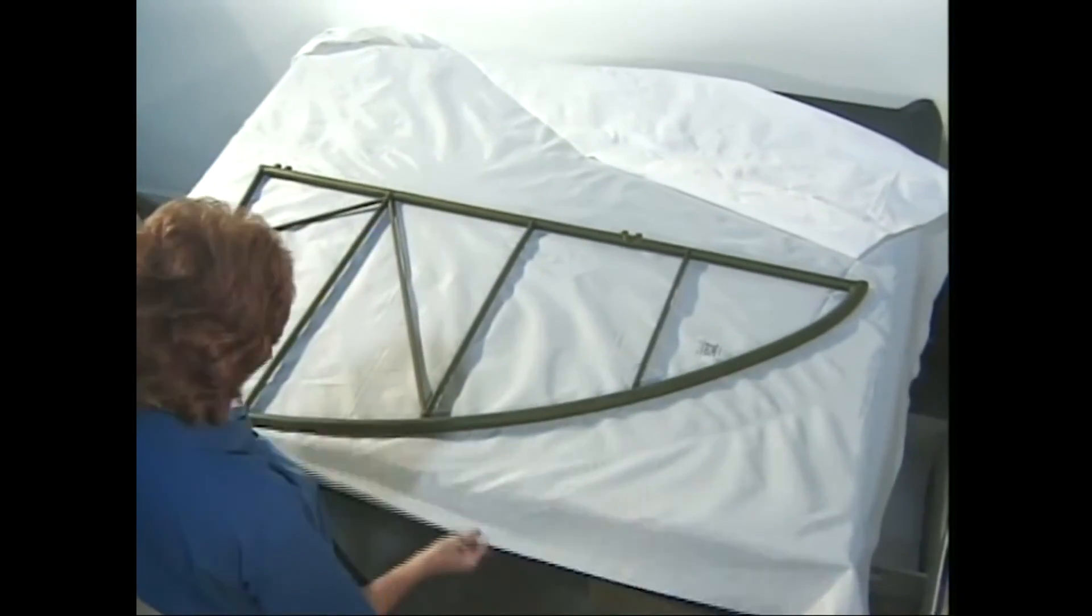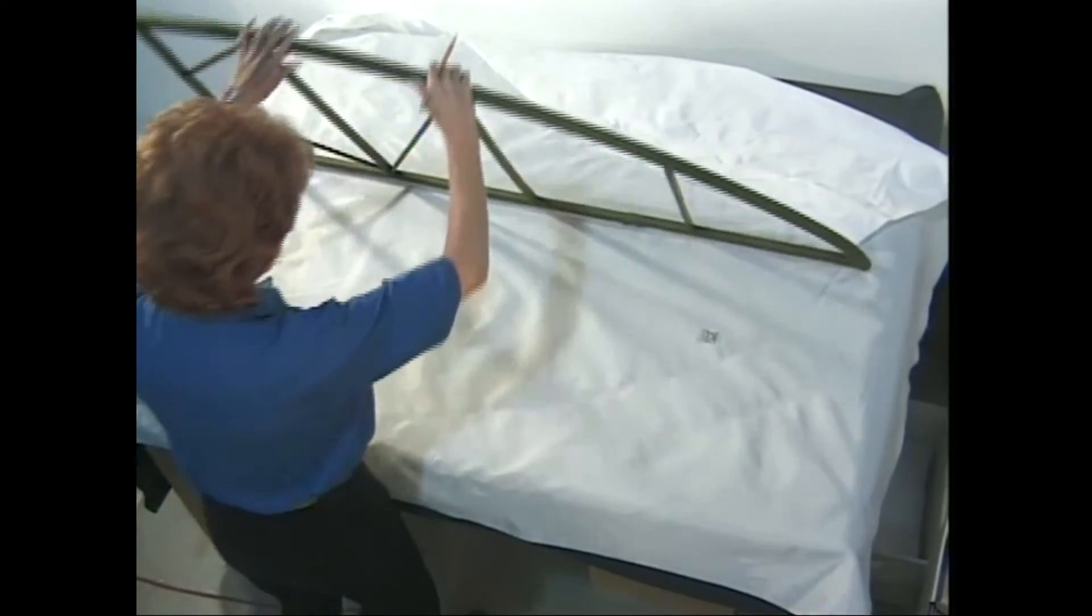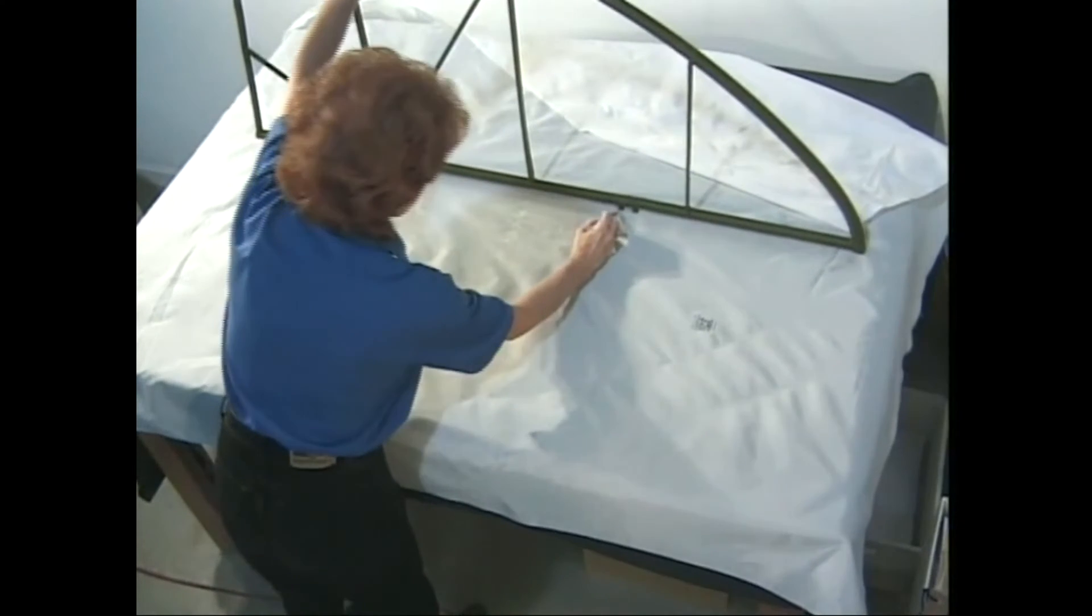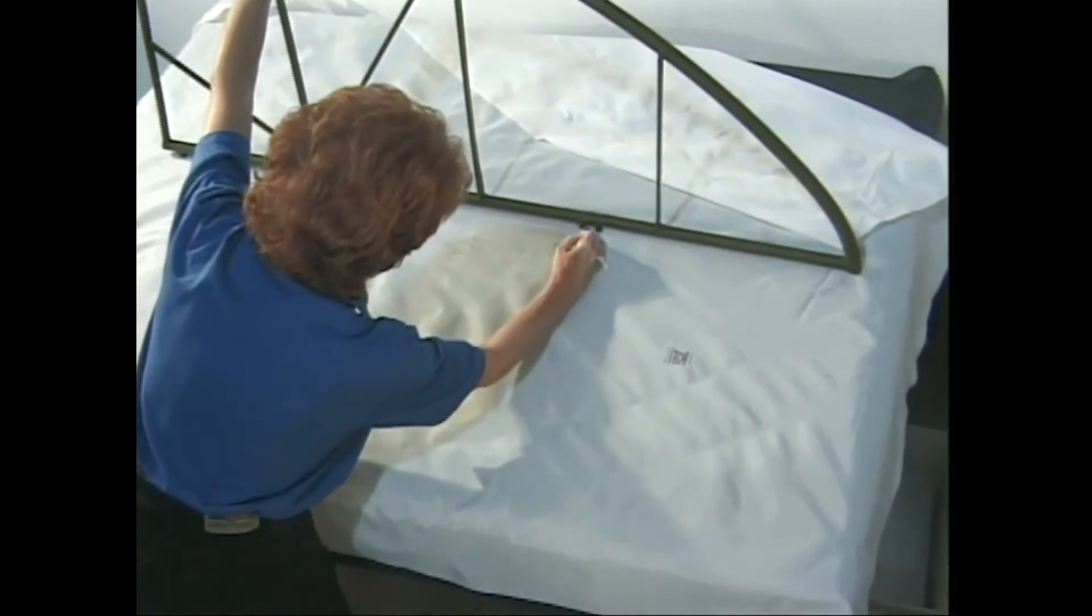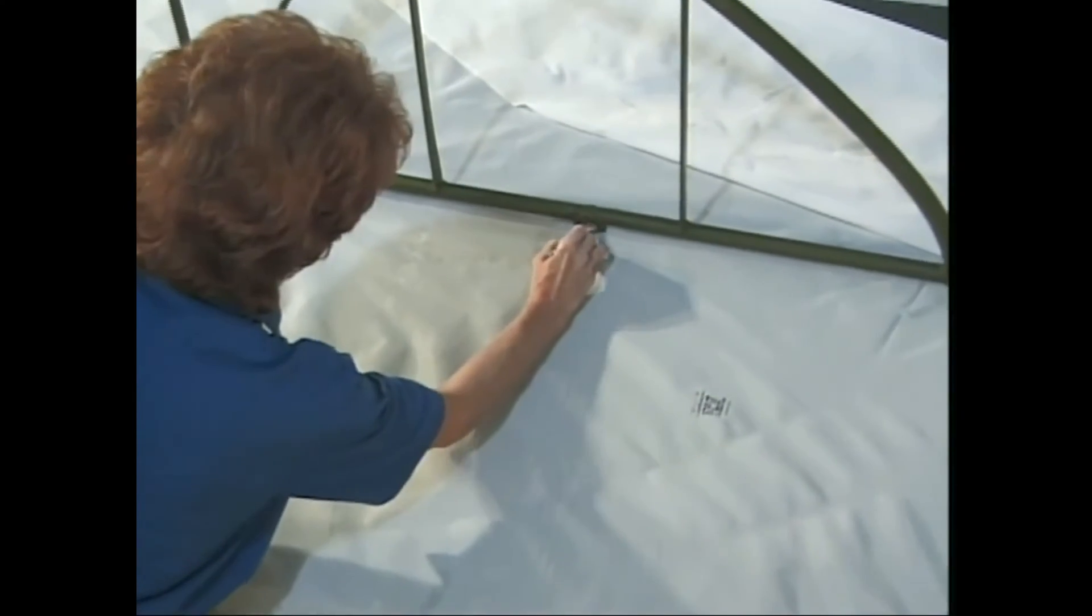Start by laying enough fabric out flat on a large work table to cover both sides of the stabilizer. Rest the stabilizer vertically on its straight hinge edge in the middle of the fabric.